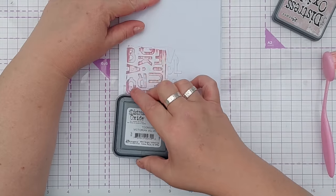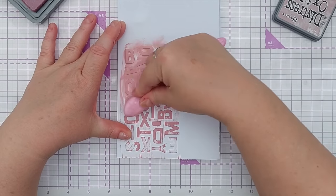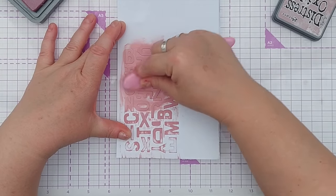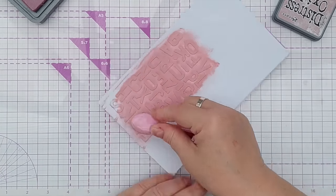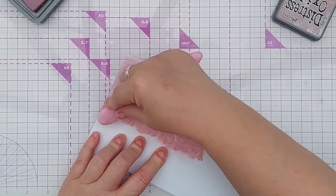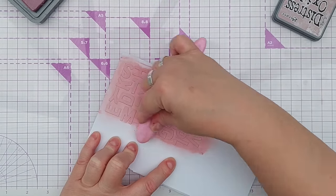So I want to add some pink. I've got Victorian Velvet. I'm just going to swipe that over and then bring in my brush and blend it on, getting into all those nooks and crannies.